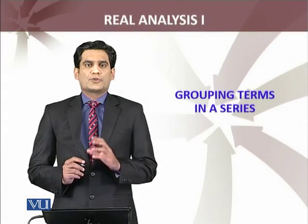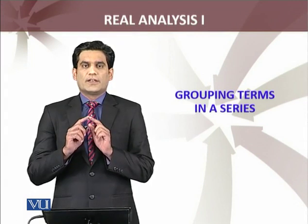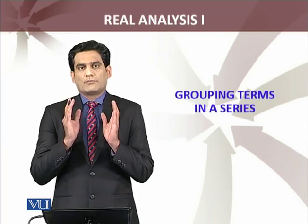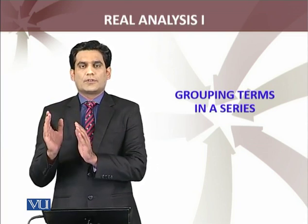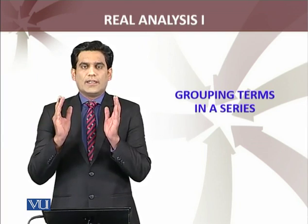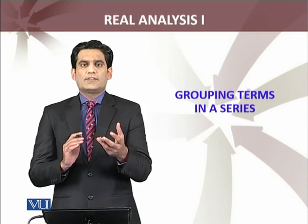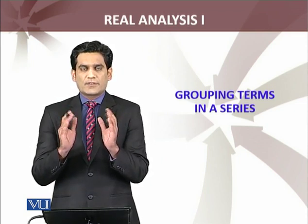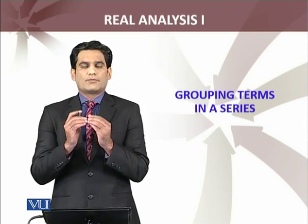We are going to discuss grouping of the terms of a series. It means that if you have an infinite series, उसकी कुछ terms की — let's say, 1,000 terms की एक group बना दिया, फिर 2,000 terms का एक group बना दिया, so on and so forth. इन groups बनाने से जो नई series आ रही है, if the series is convergent, then what will happen about the convergence of that new series?